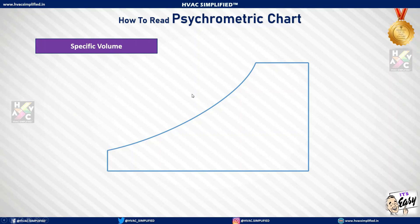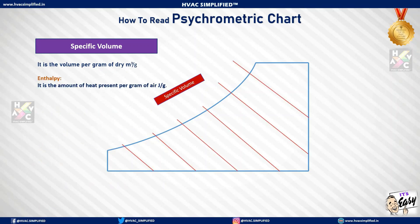Specific volume is the volume per gram of dry air, measured in cubic meters per gram. Enthalpy is the amount of heat present per gram of air, measured in joules per gram. On the psychrometric chart, specific volume is represented by inclined lines.